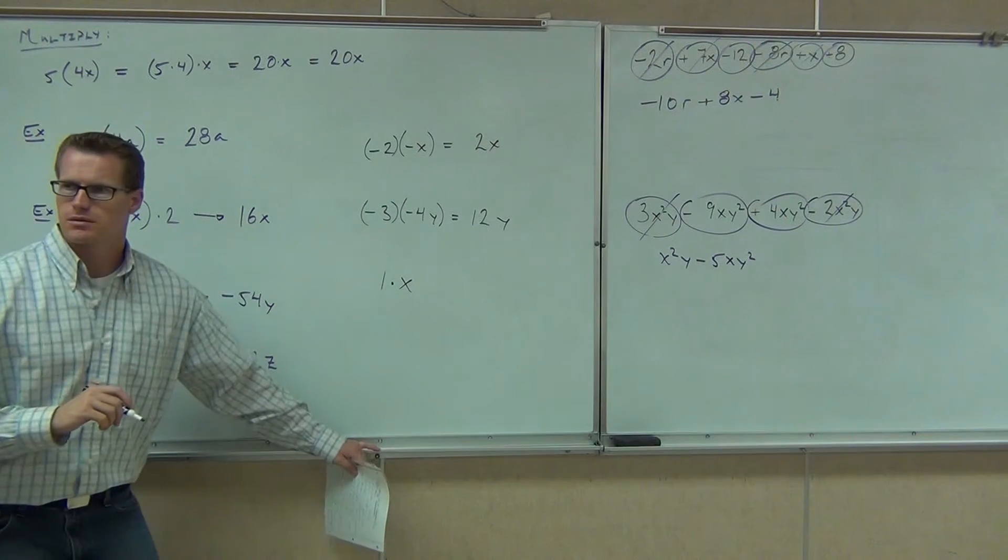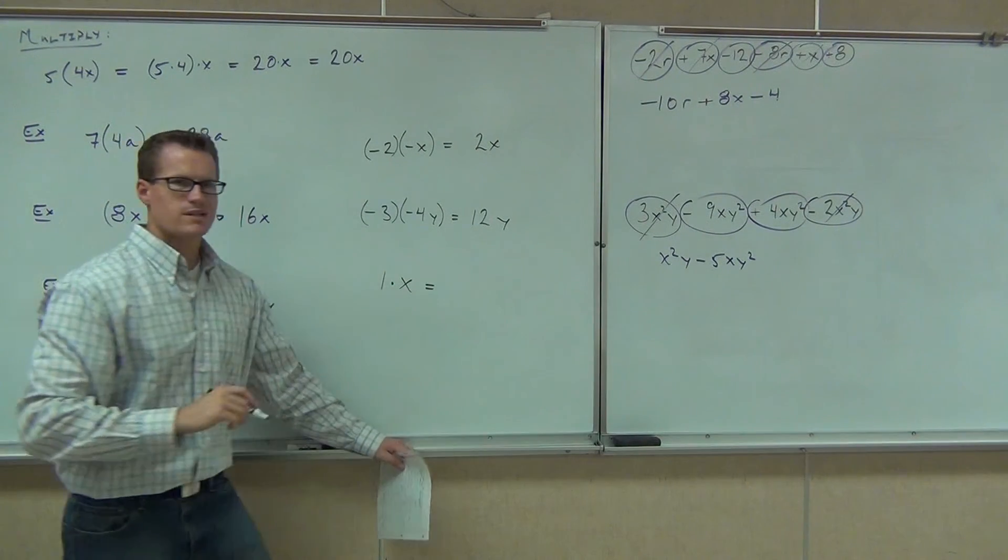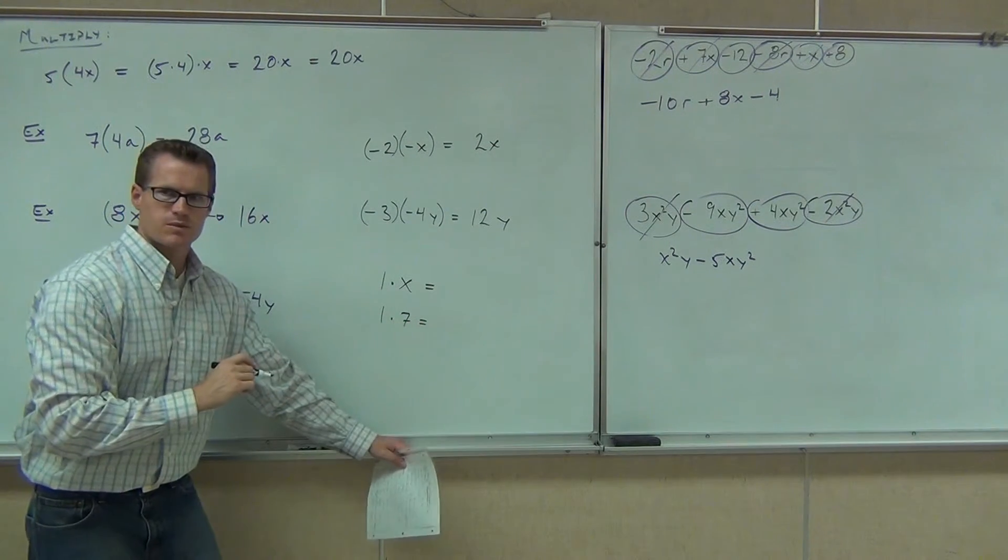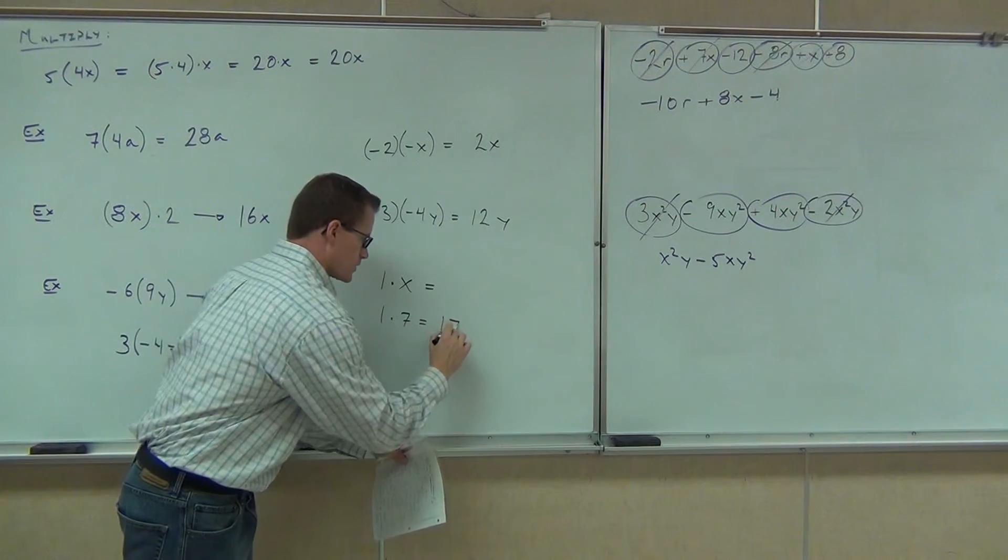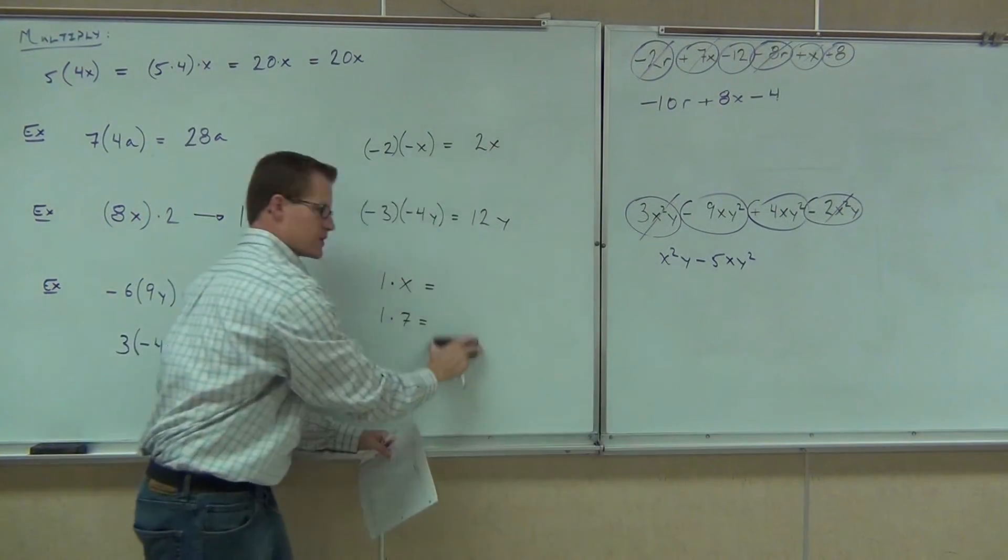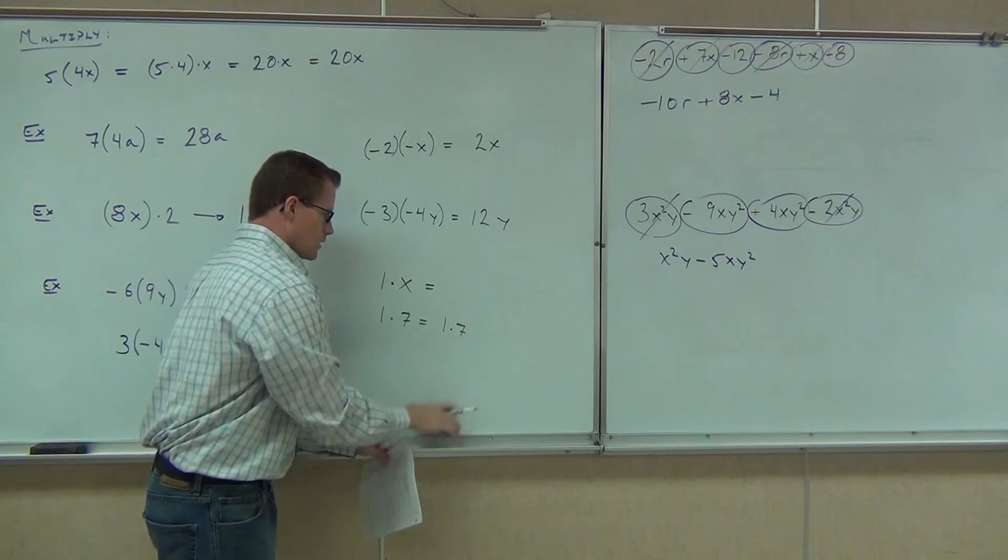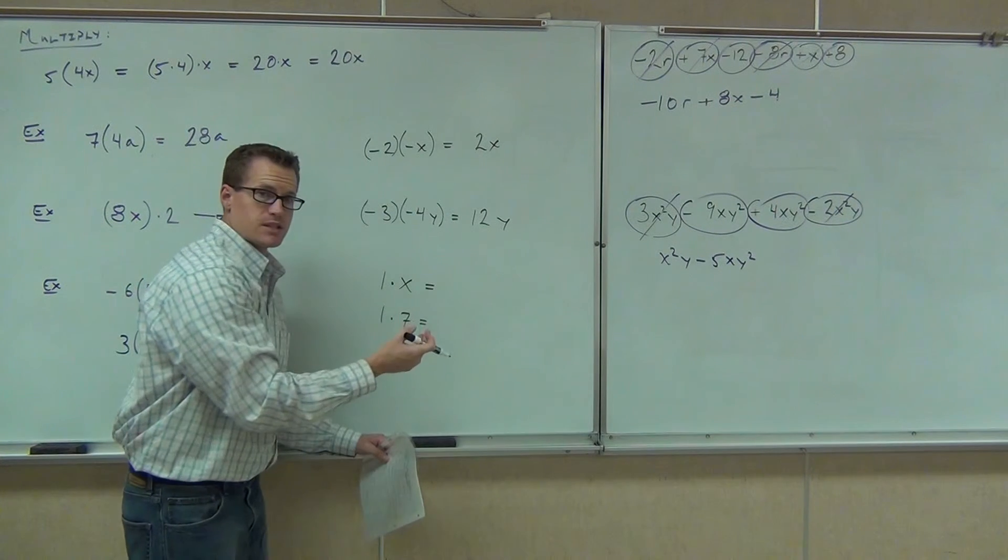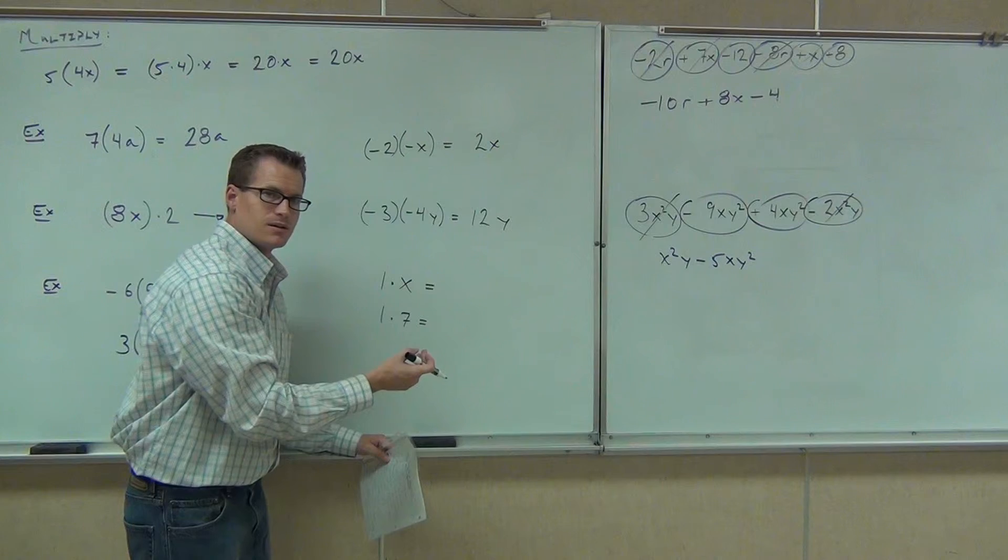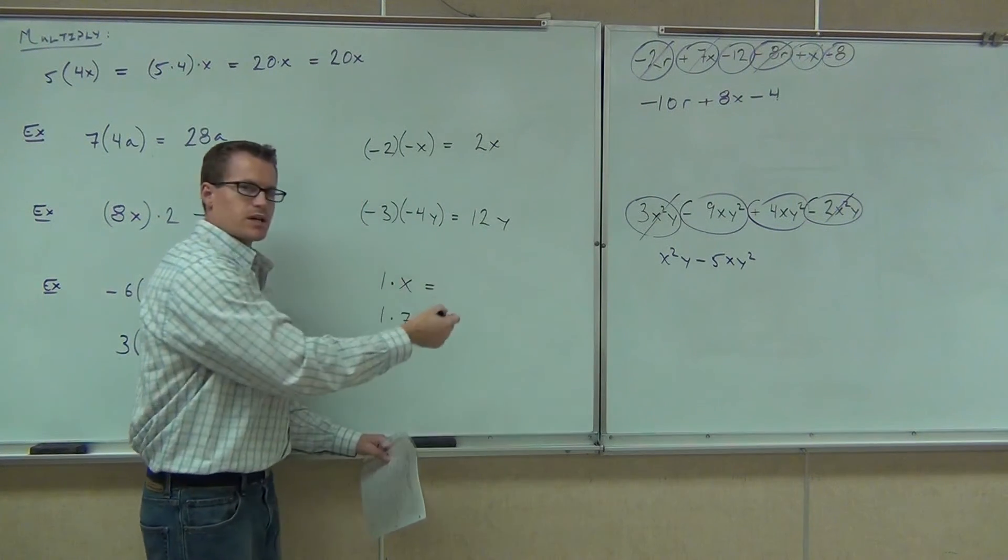How much is 1 times x? X. How much is 1 times 7? 7. Do you do this when you write 1 times 7? Do you write 1 7? No. No, that would be 17, right? You don't keep writing 1 times 7, do you? No. 1 times x is x. 1 times 7 is 7, right? No, 1 times x. What's 1 times 7? 7. What's 1 times x? X.